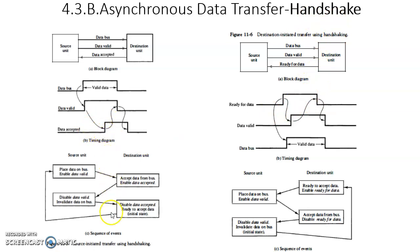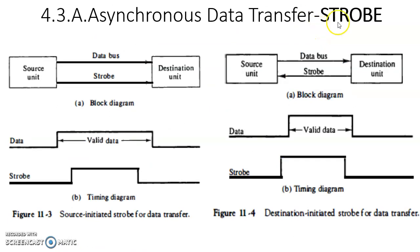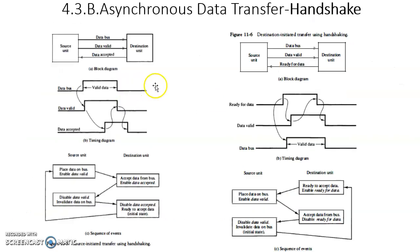Handshake-controlled data transfer can also be initiated either by source or destination. On the left side you can see source-initiated handshake data transfer; on the right side you can see destination-initiated data transfer using handshake. Let us look at source-initiated. First, we need to compare handshake data transfer with strobe data transfer. The source unit and destination unit use one data bus and a control signal in strobe, whereas in handshake there is one more line used for acknowledgement.